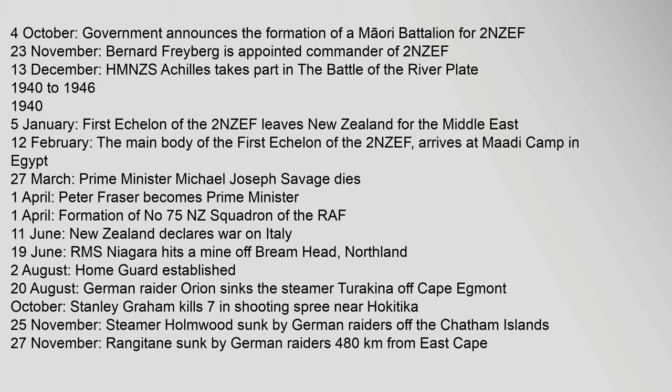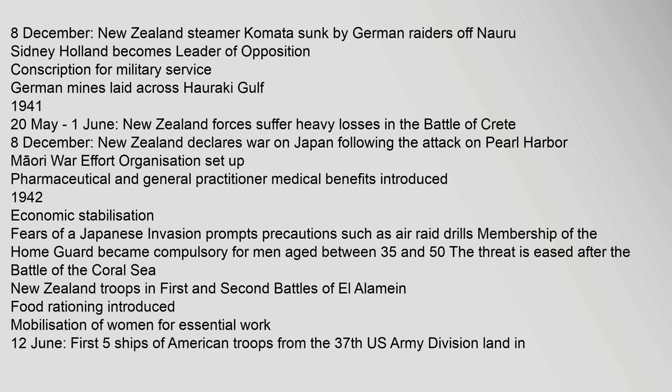2 August: Home guard established. 20 August: German raider Orion sinks the steamer Turakina off Cape Egmont. October: Stanley Graham kills seven in shooting spree near Hokitika. 25 November: Steamer Holmwood sunk by German raiders off the Chatham Islands. 27 November: Rangitane sunk by German raiders. 8 December: New Zealand steamer Komata sunk by German raiders off Nauru. Sydney Holland becomes leader of opposition. Conscription for military service. German mines laid across Hauraki Gulf.